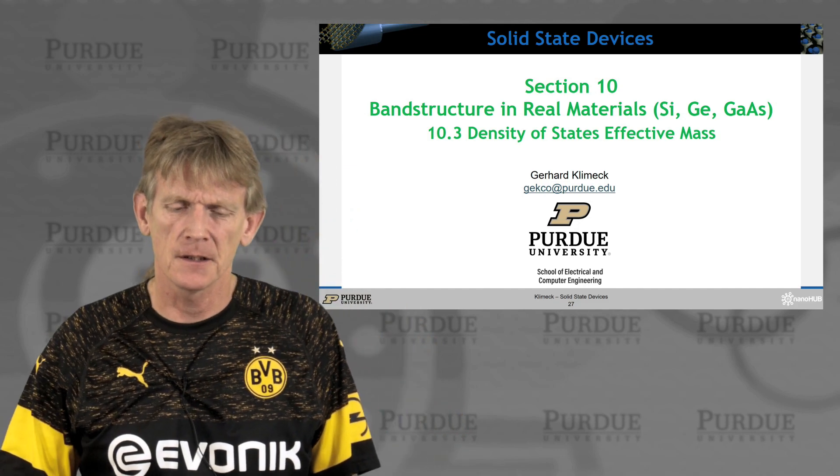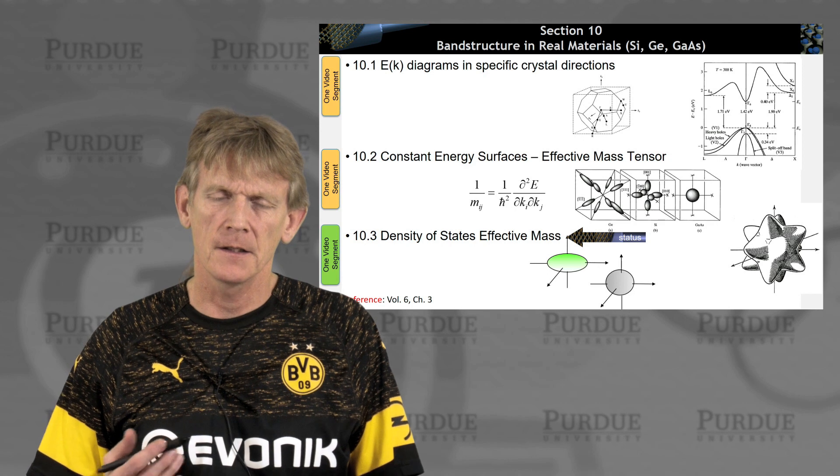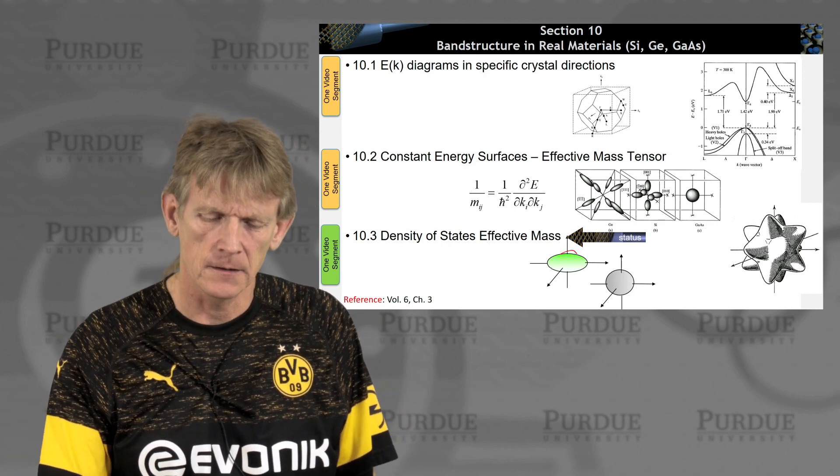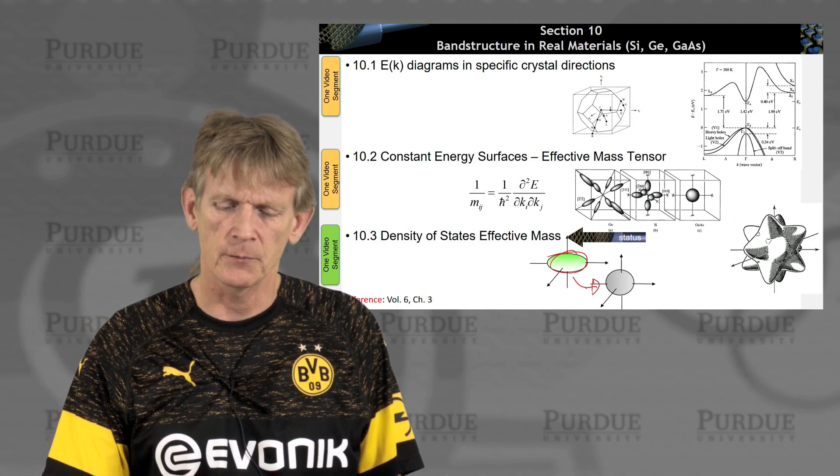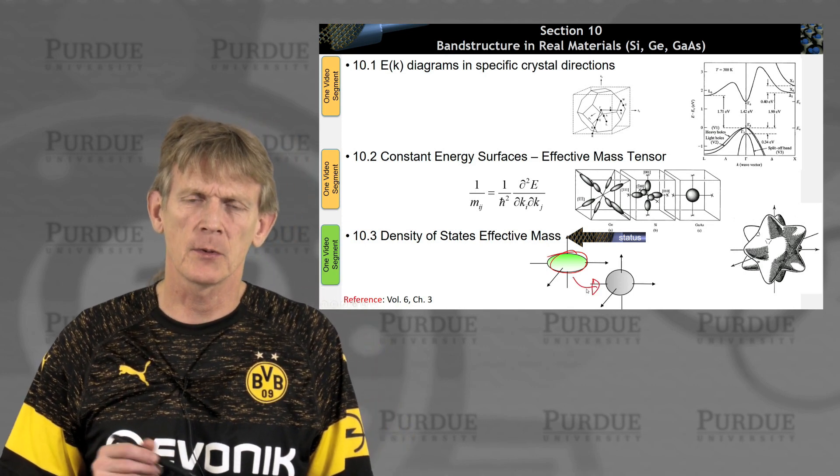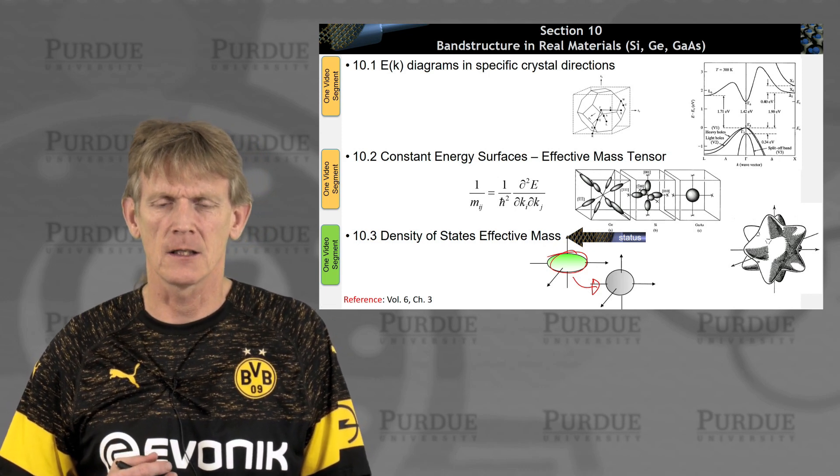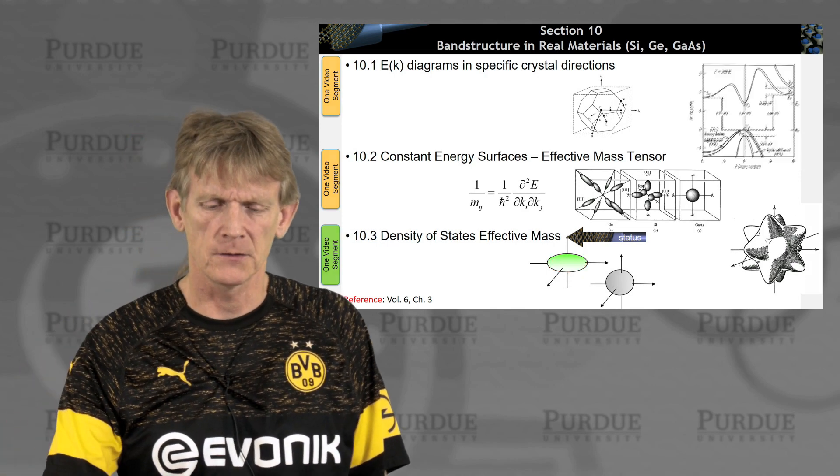So let's get to the last topic here in section 10, the density of states effective mass. We're trying to collapse complicated dispersions like this ellipsoid into simplified expressions such that those simplified expressions can be used for device calculations that are sort of back of the envelope or simplified computer models.